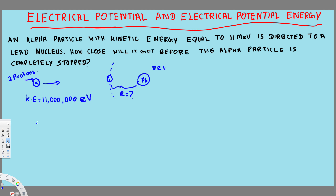The kinetic energy is given in electron volts and we have to convert it to joules because we are dealing with SI units. One electron volt is equal to 1.6 × 10⁻¹⁹ joules, so we need to multiply to convert.